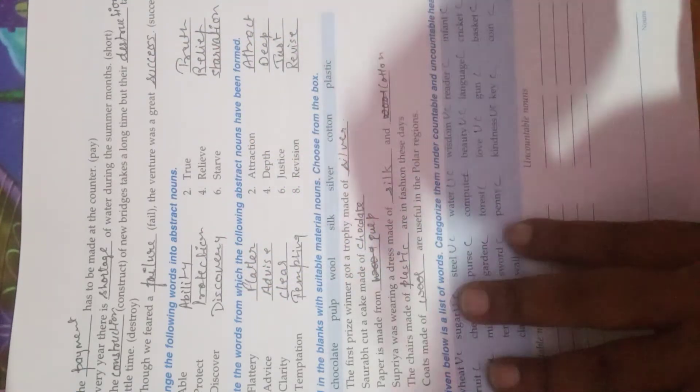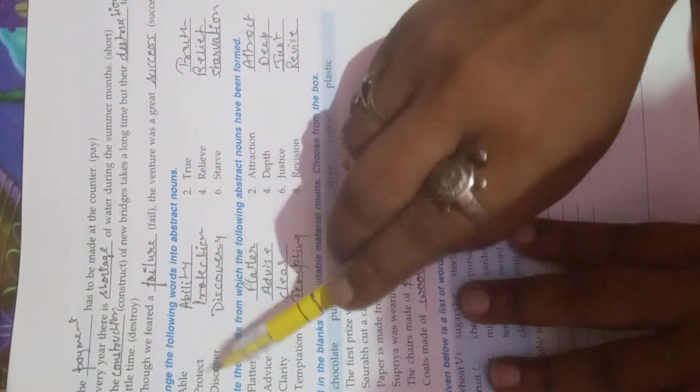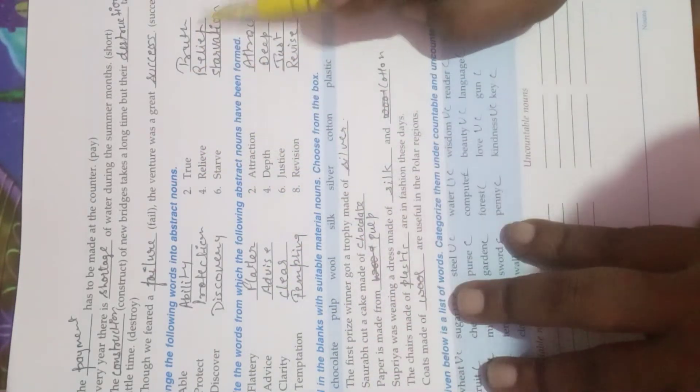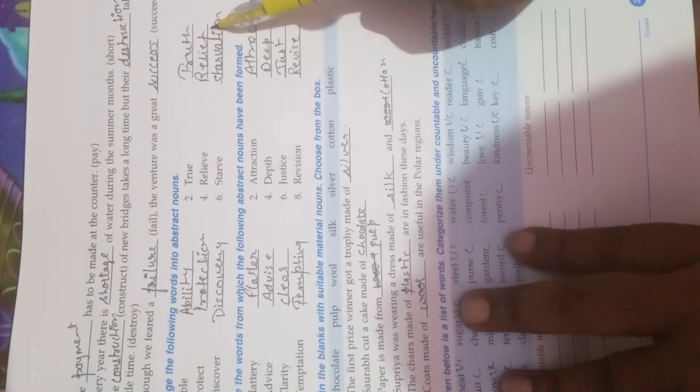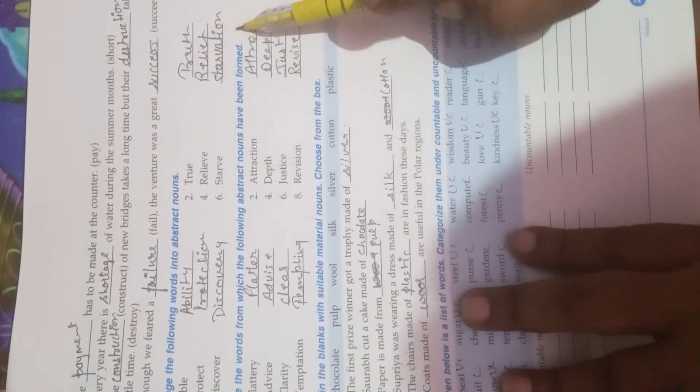We have to change the following word into abstract noun. Able becomes ability. Protect, protection. Discover, discovery. True, truth. Relief, relief. Starve, starvation.